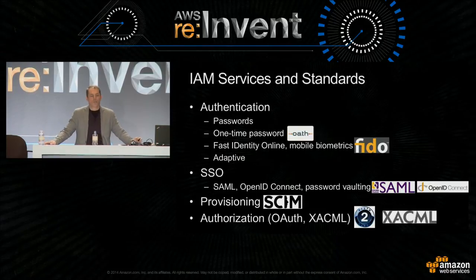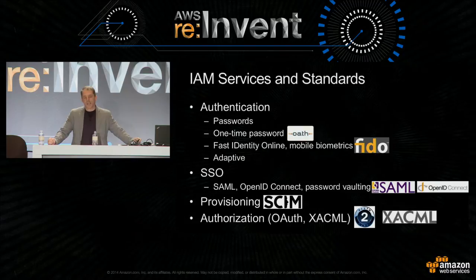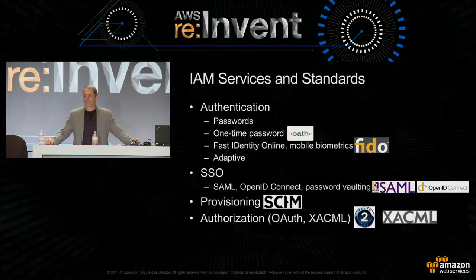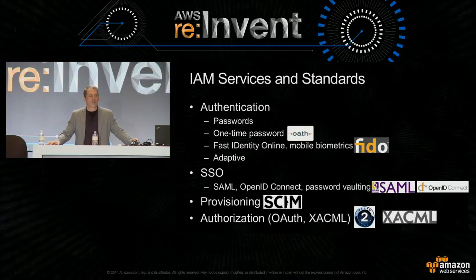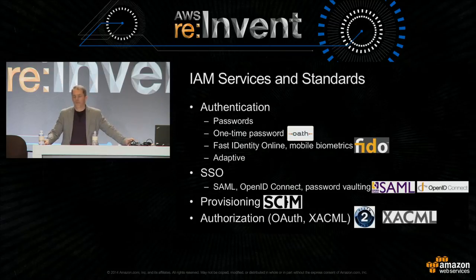On provisioning, there's SCIM—Simple Cloud Identity Management, or System for Cross-Domain Identity Management—which uses REST and JSON to find a standard way to provision users into systems. With the exception of AWS and federated users, virtually everybody needs the ability to provision users into a target system. REST and JSON is emerging as the underlying architecture for those. For example, Azure AD uses REST and JSON for its Graph API.